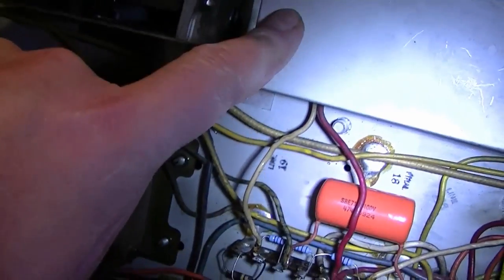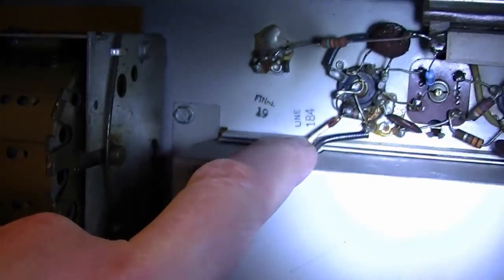So that's tuner, tuner output, first video IF. There's the output of the trap going to the first audio IF, second audio IF and ratio detector. That's where I think the problem is.